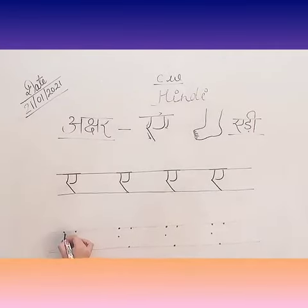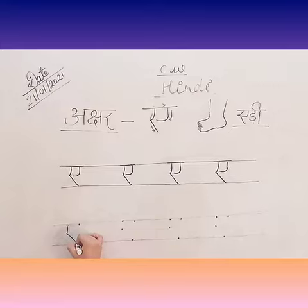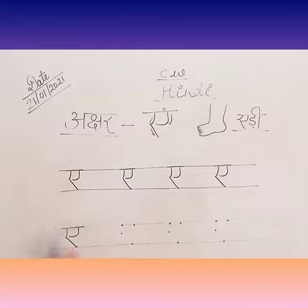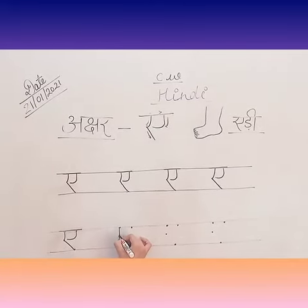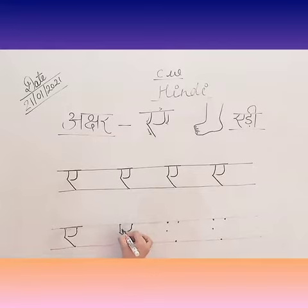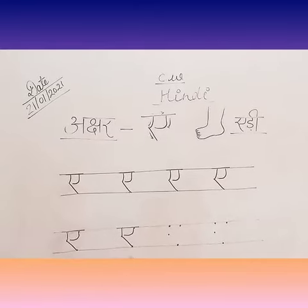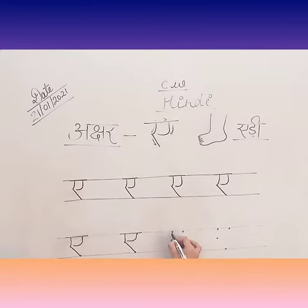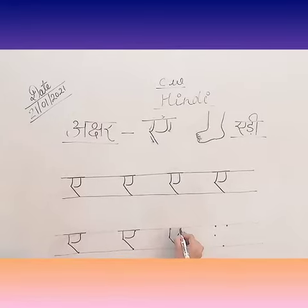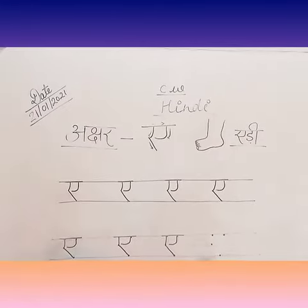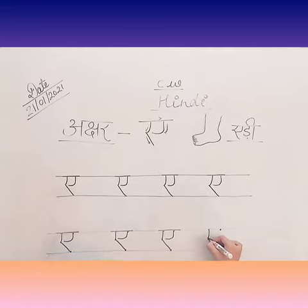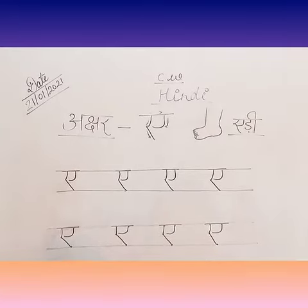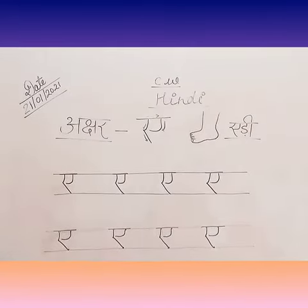Let's start with the first one, then the second one. Now we will write the letter A — start with a sleeping line, then we will go to the slanting line and the slanting line. Now you have to complete your own writing in your Hindi notebook.